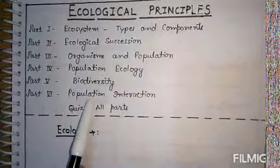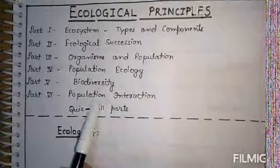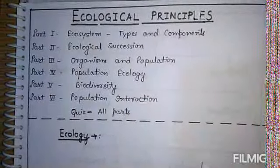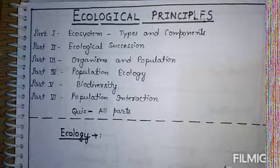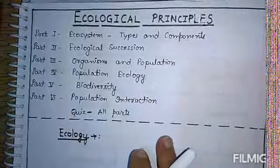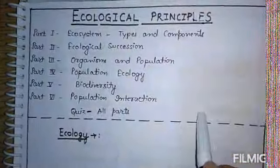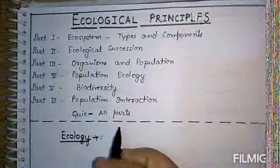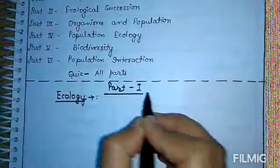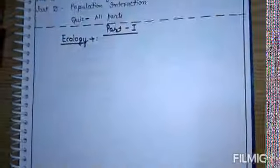The sixth part would include population interaction, which is also known as species interaction. Here we will study about symbiosis, mutualism, commensalism, predation, etc. This whole ecological principle topic is subdivided into several divisions and we would take them one by one. Today we would study about the first part, that is about the ecosystem, and this will also include about ecology.